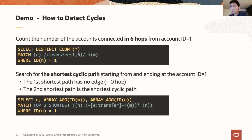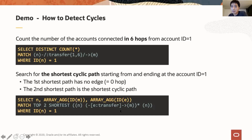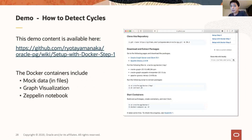These are the graph queries. The first counts the number of accounts connected in one through six hops from account ID one. The second searches for the shortest cyclic path starting from node one and returning back to the same node. This demo content is available from my GitHub repository — you need Docker on your laptop or cloud instance, clone the repository, download and extract the Oracle Graph 7 client packages, then start containers using Docker compose. The mock data is then loaded on the graph server, and you can query and visualize using built-in tools such as Zeppelin notebook and graph visualization from a web browser.